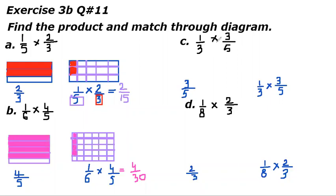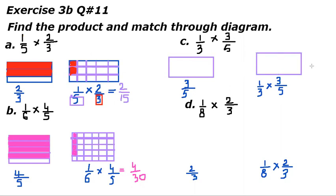Now let's do part C: one-third of three-fifths. First we have to draw three-fifths, which is the second fraction. I need two boxes of exactly the same size. Three-fifths means out of five I have to color three parts, so I have to cut this box into five parts in a horizontal pattern. I have cut it into five parts and will color three parts.